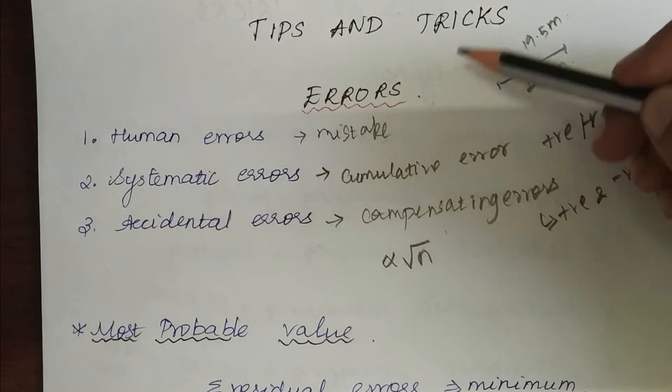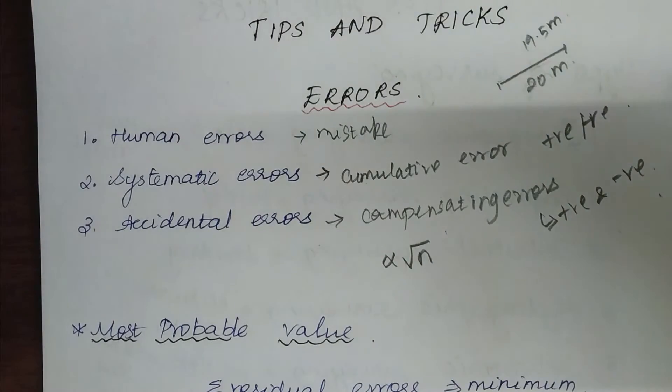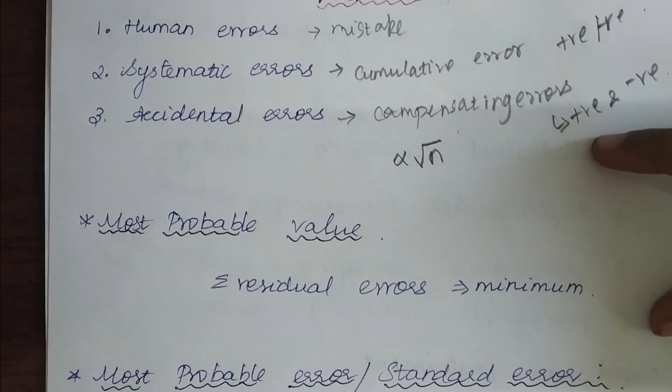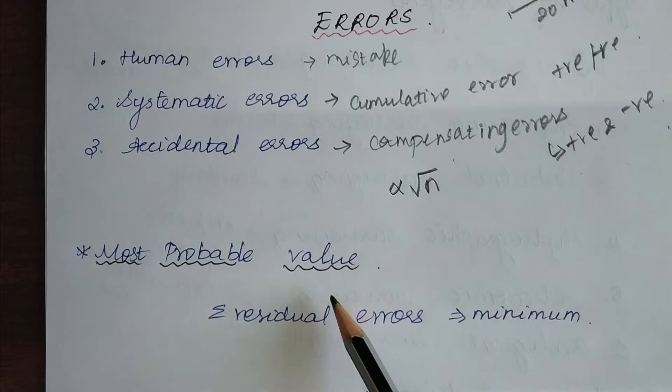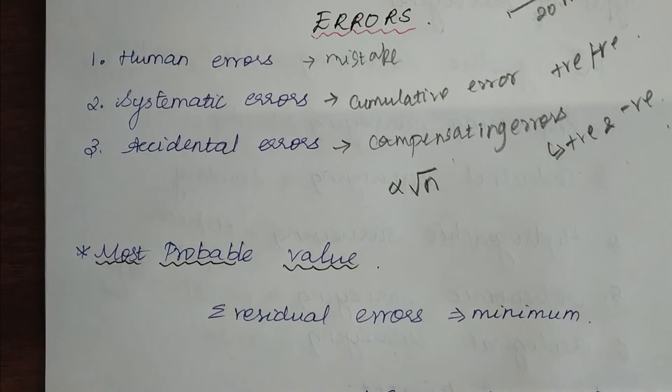While talking about errors, there are two main definitions one should know. The first one is most probable value. As the name suggests, it is the value that has more chances of being correct than other values.